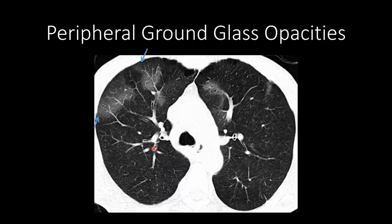This is another patient under investigation. We can see ground glass opacities in the periphery of the lung which are starting to become confluent. You could imagine that maybe there were two or three nodules here that have increased in size, creating a confluent peripheral ground glass opacity.